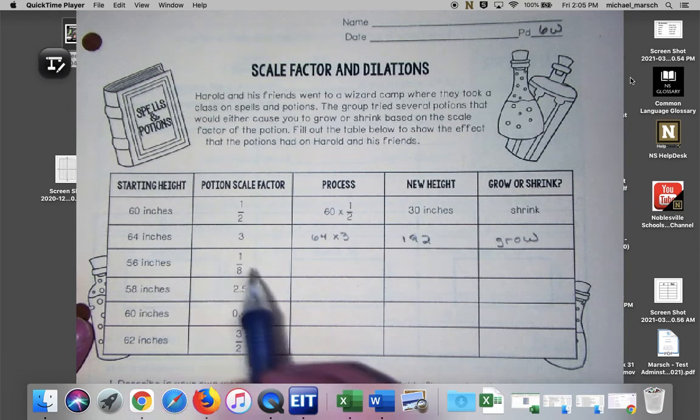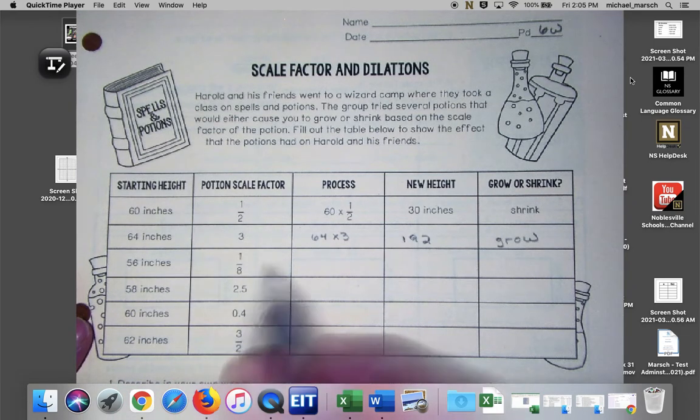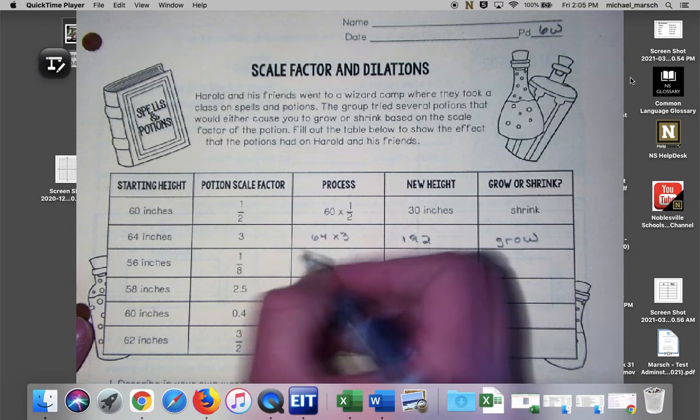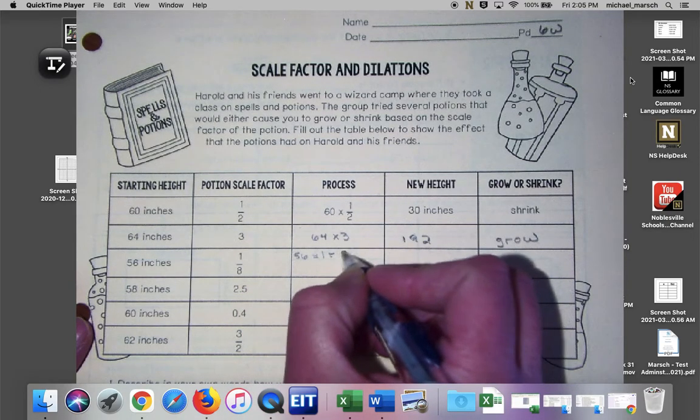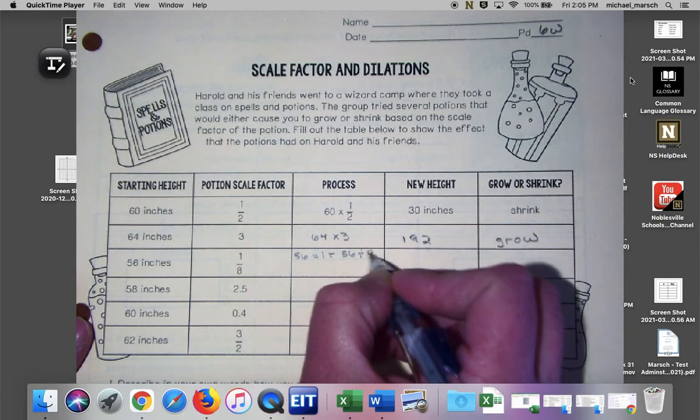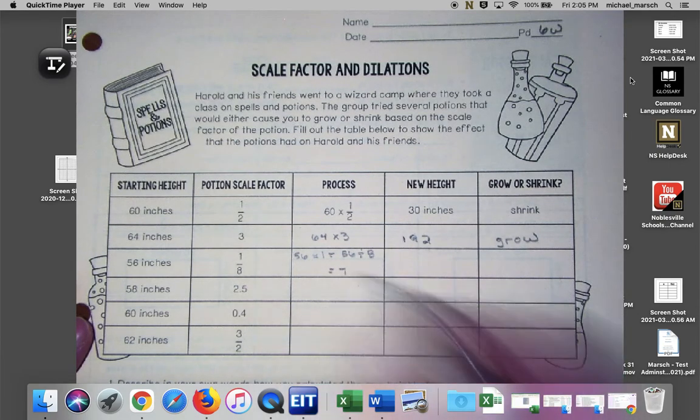Okay, 56 inches tall, potion is one eighth. So the way you multiply times one eighth is you do 56 times one and then you divide by the denominator eight so you get seven. I know you can just divide by eight but some of our fractions are going to have numerators in them so we need a strategy for multiplying by the numerator, divide by the denominator.